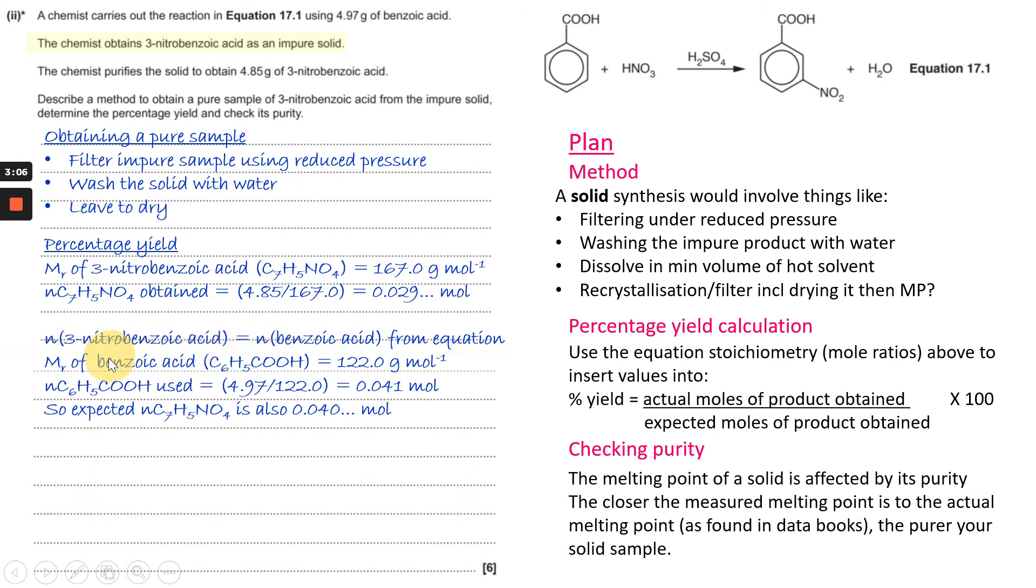The Mr of benzoic acid, which is C6H5COOH this time, is 122 grams per mole. So similar kind of calculation: put 4.97 grams in because that was the amount that was used, 4.97 grams of benzoic acid, divide that by 122 grams per mole.